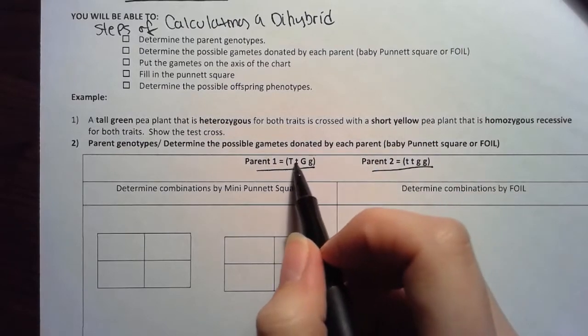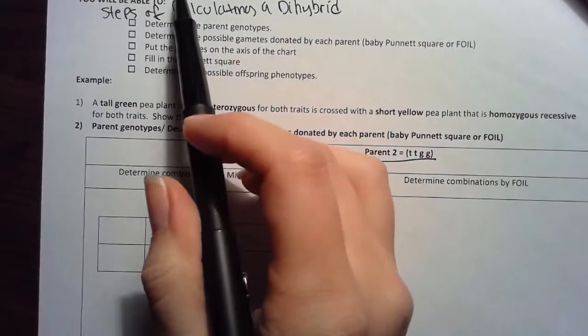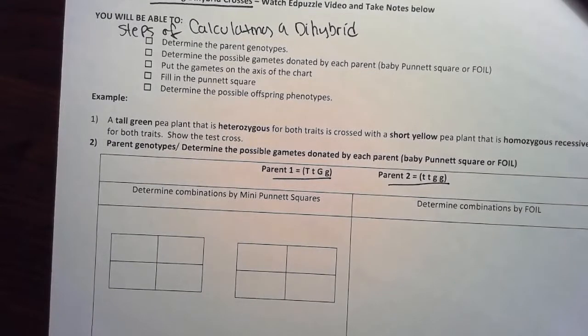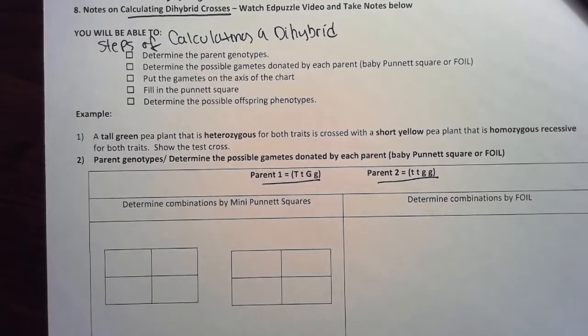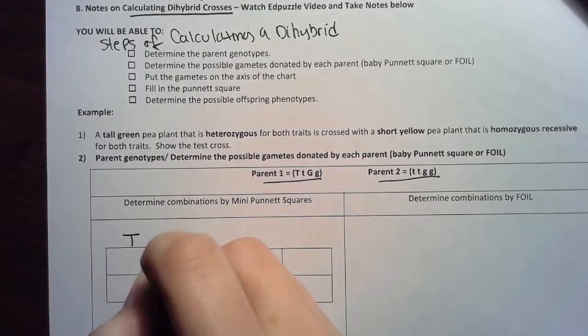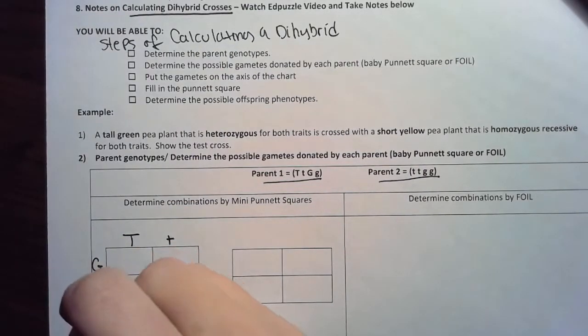I'm going to show you two different methods to determine all of the combinations that all of these alleles could combine in meiosis, which would then determine how they would combine during fertilization. The first way that I can determine all of my different combinations by determining this is determining my gametes essentially, by just completing a mini Punnett square. I'm going to put one gene on the top and then one gene on the side.